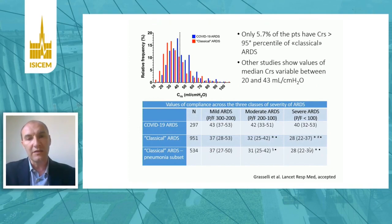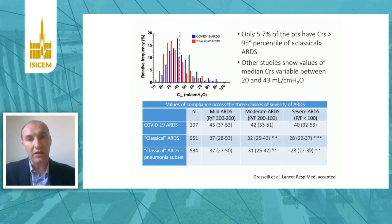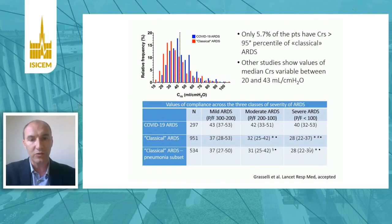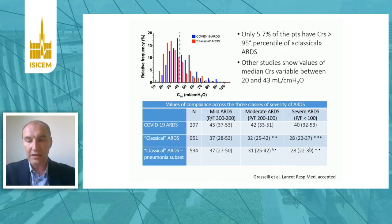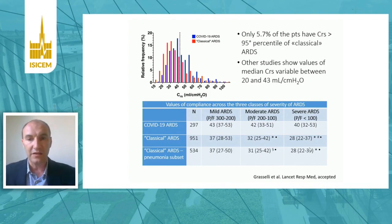What is very different between COVID-19 and classical ARDS is the relationship between compliance and severity of oxygenation. In classical ARDS there is a clear relationship between impaired respiratory mechanics and severity of oxygenation, while in COVID-19 ARDS the median compliance value is basically the same across mild, moderate, and severe ARDS categories.